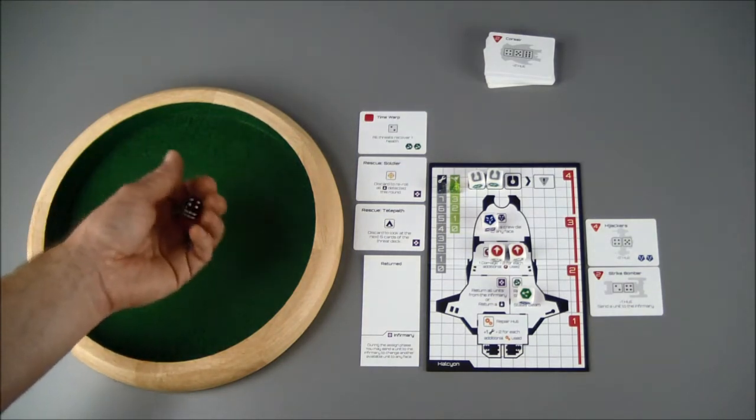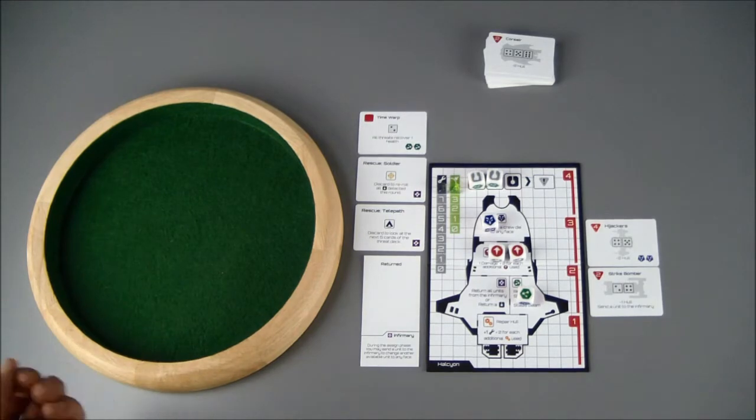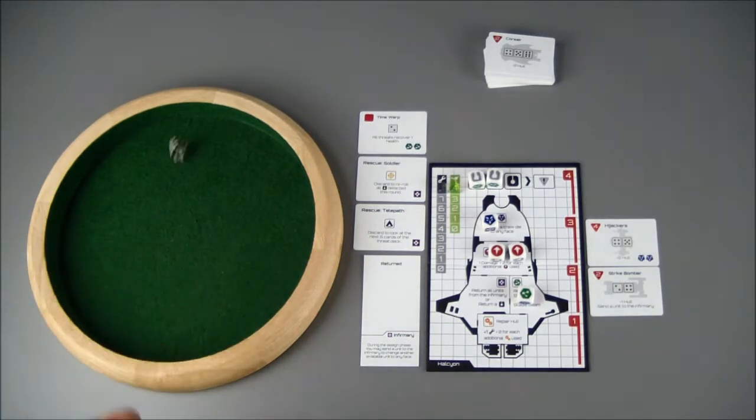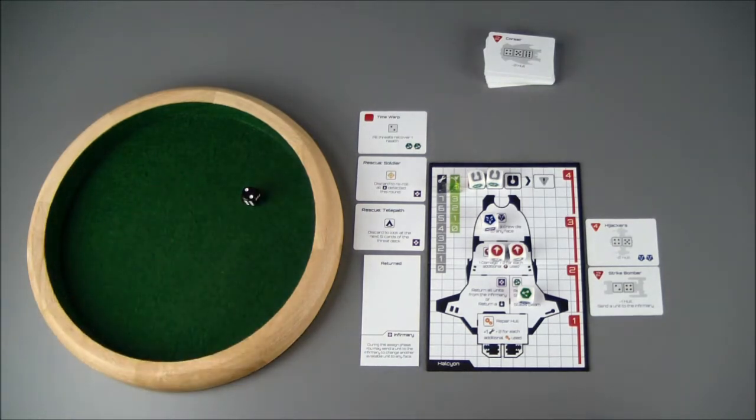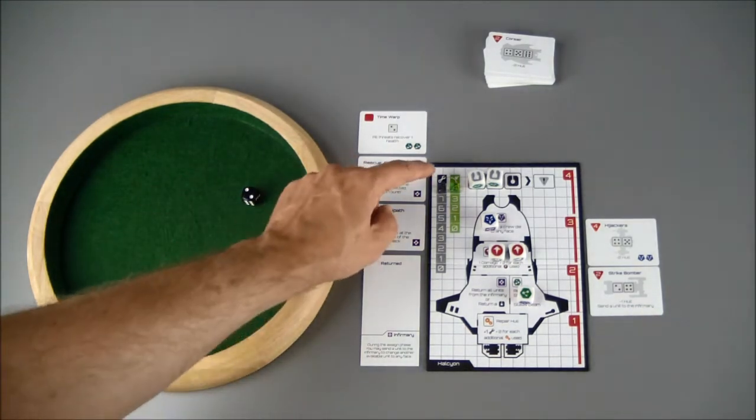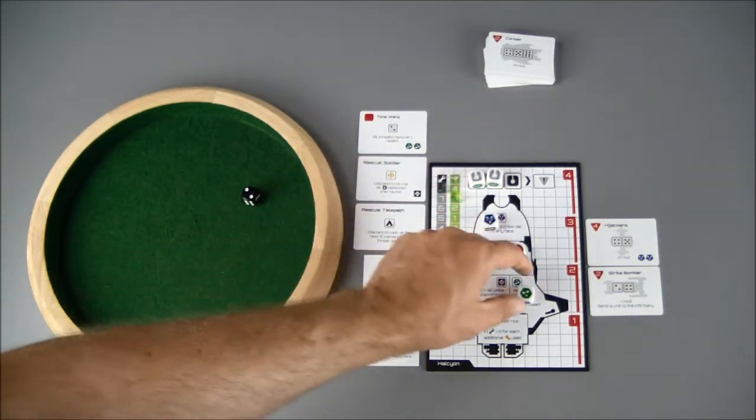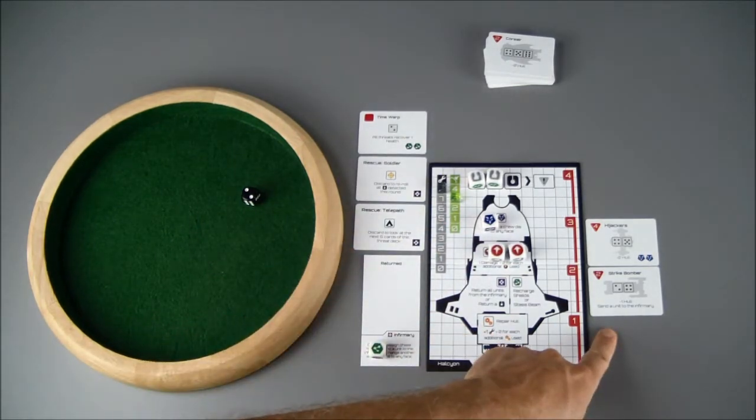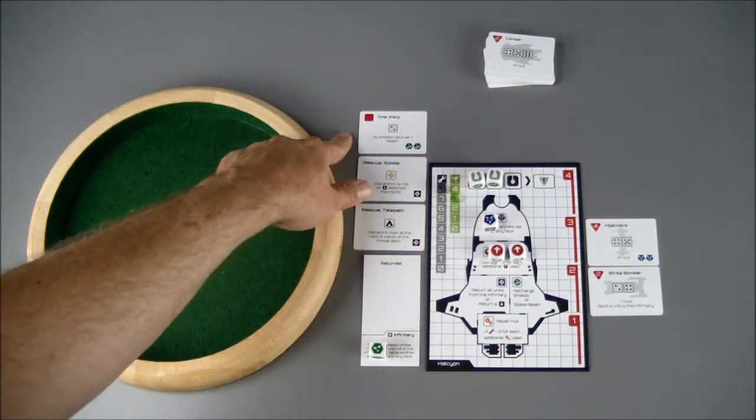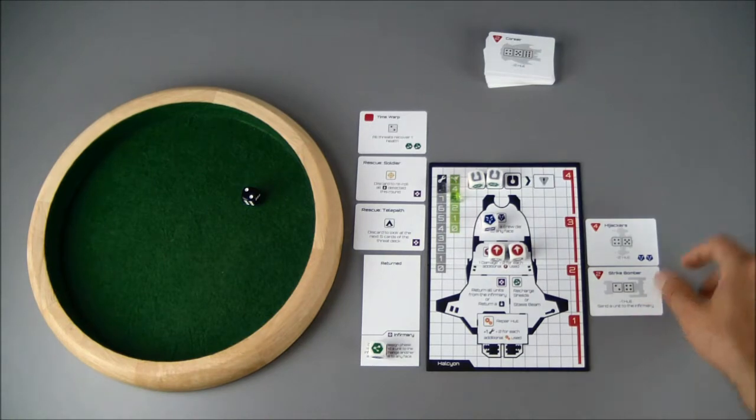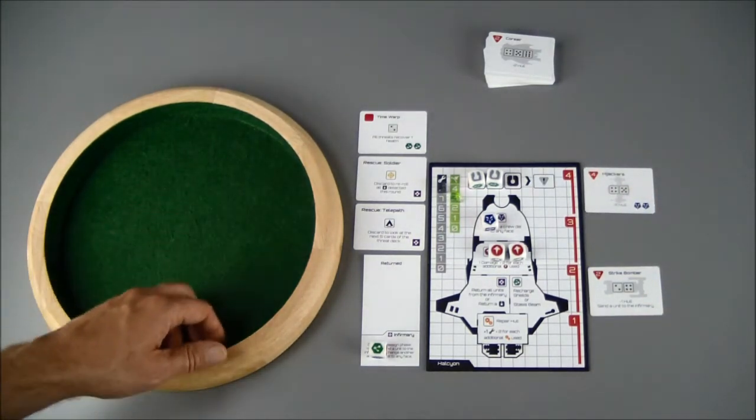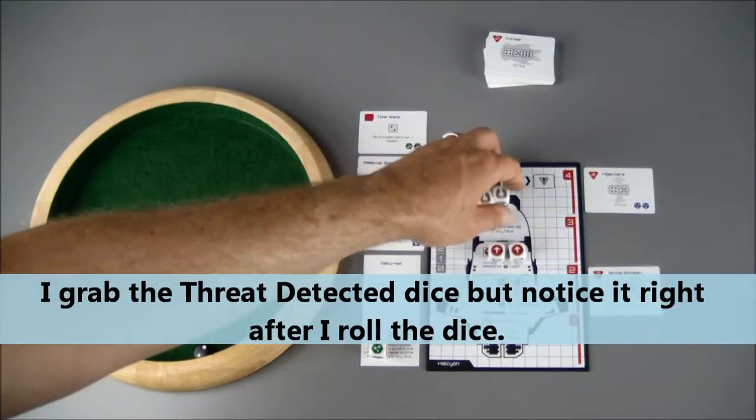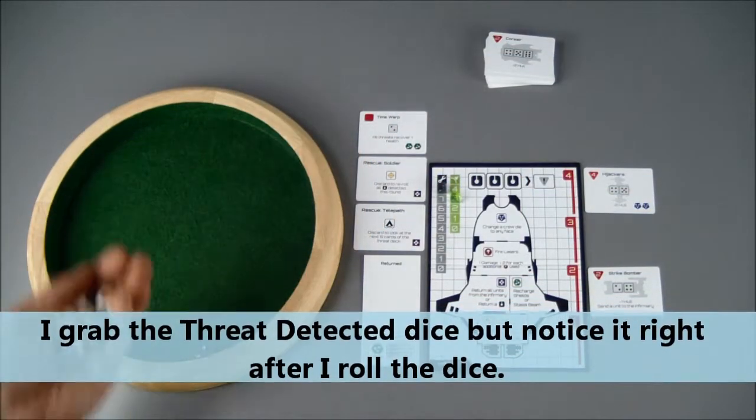Let's see. We would take a one, a three or a six. Those will be our safe numbers. And a two is not safe. Minus one to the hull. Send a unit to the infirmary. All threats recover one health. This is at full health but the hijackers heal. And we have somebody in the infirmary now.